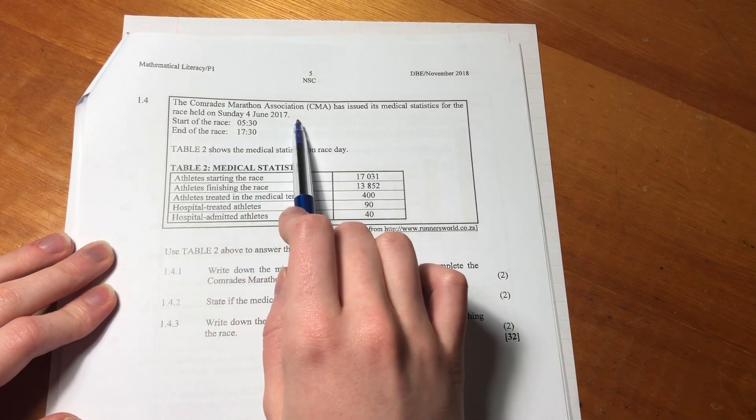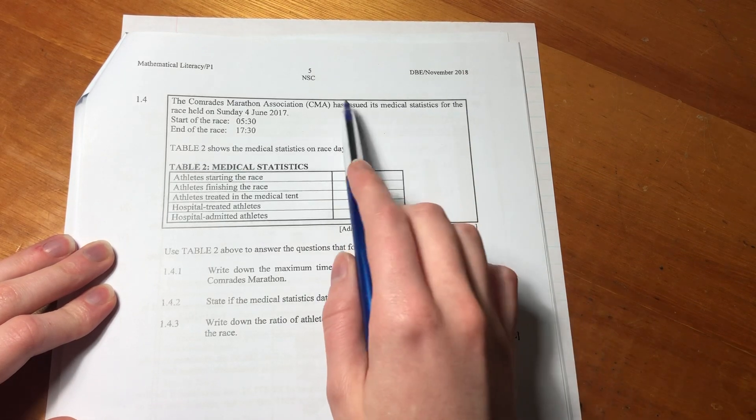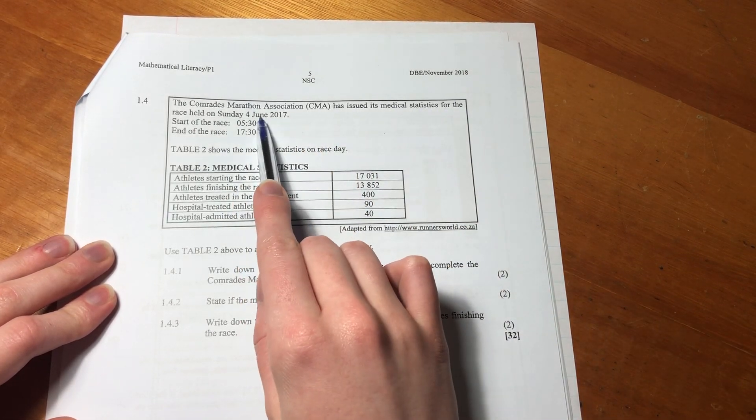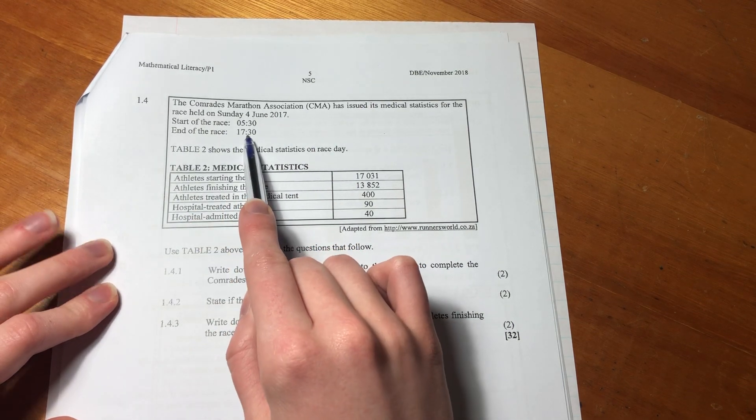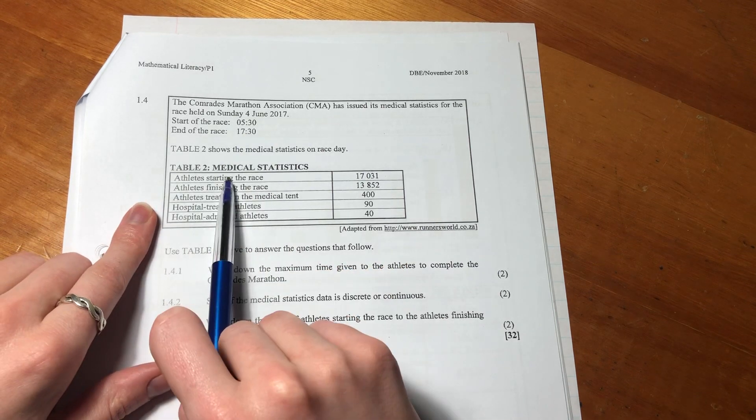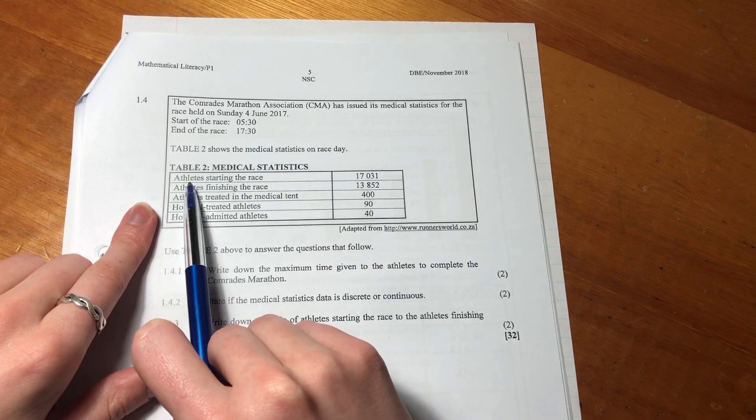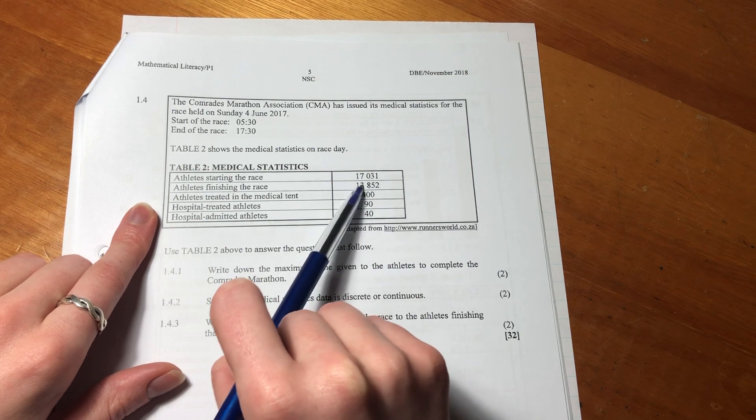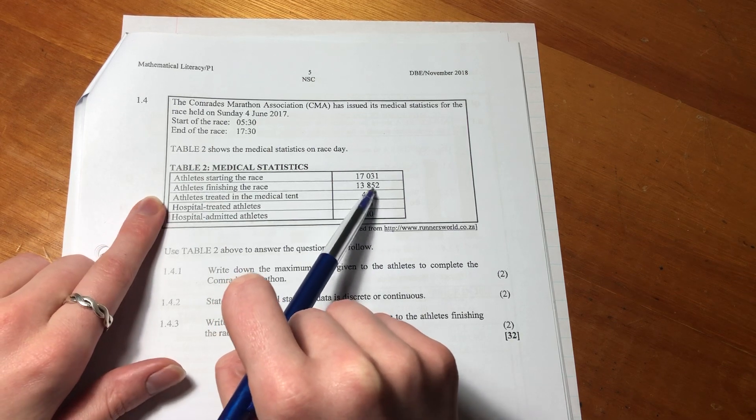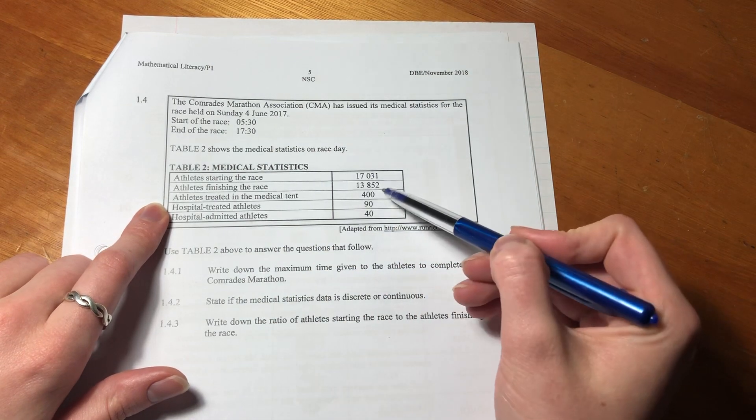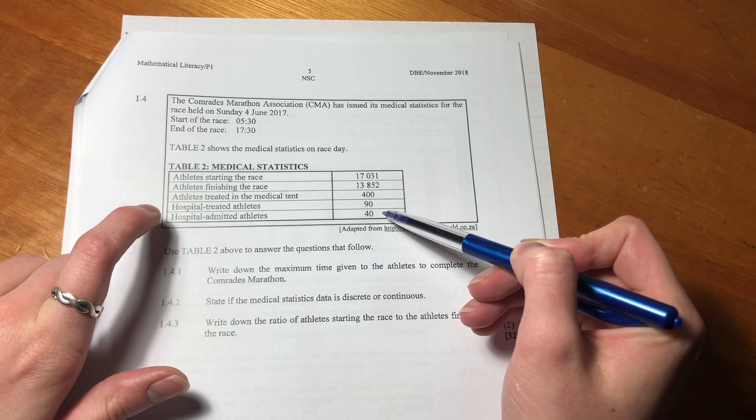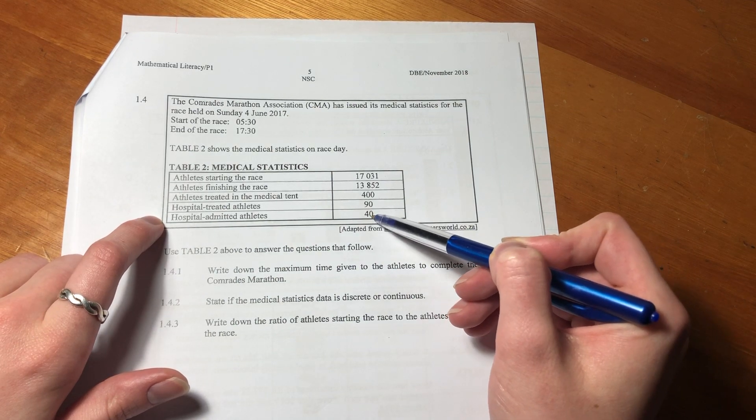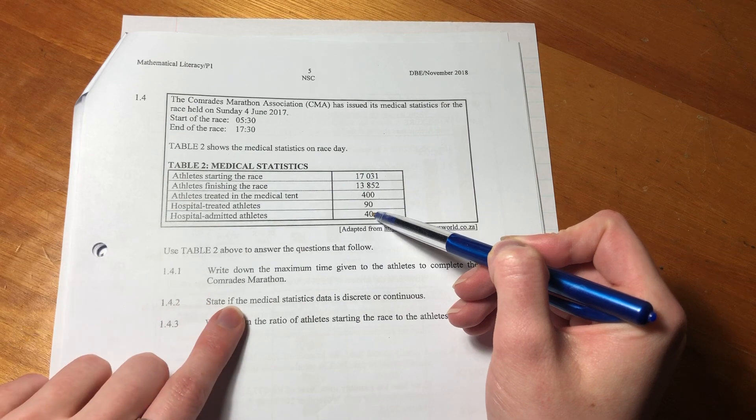So we're still on the Comrades narrative. It was talking about the medical statistics for the race held on the 4th of June. It tells us the race started at half past five in the morning, and finished at half past five in the afternoon. And here's the medical statistics. Athletes starting the race, athletes finishing the race, so the number finishing the race can never be more than the ones that started. Otherwise, there's some cheating issues going on. Athletes treated in the medical tent, hospital treated athletes, hospital admitted athletes. Those were where they were quite severely ill or needed some hectic medical attention.